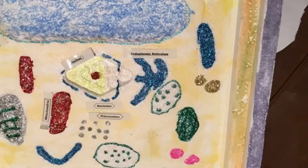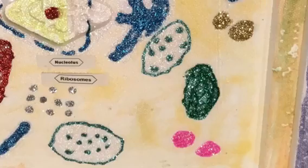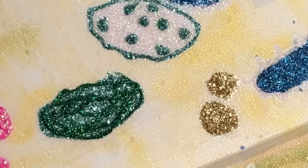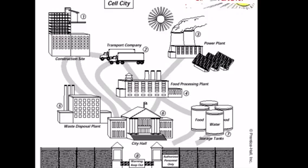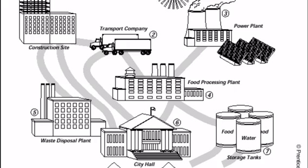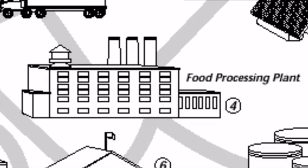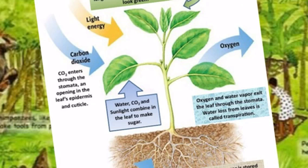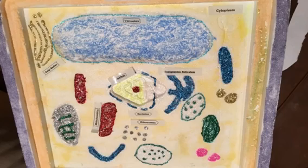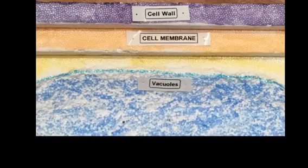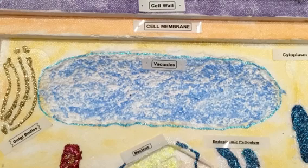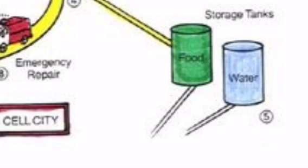The plant cell processes its food through the chloroplast, just like a food processing plant in a city. Chloroplasts help perform photosynthesis by taking in sunlight and carbon dioxide and creating energy for the cell. There's also a vacuole that acts like a warehouse, storing water and other important ingredients.